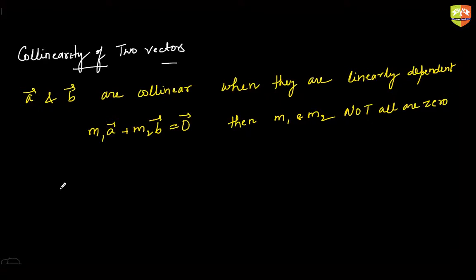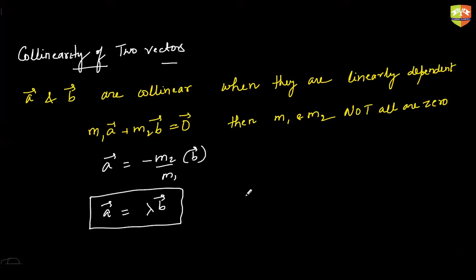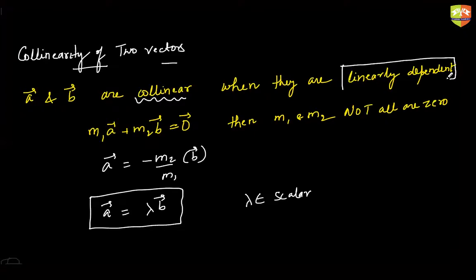In other words, you could express a as minus m2 by m1 times b, which is nothing but expressing a as lambda times b. So if you can express one vector as lambda times the other, where lambda is some scalar, then we say vectors a and b are collinear — they are linearly dependent on each other. That's why the concept of collinearity evolves with the concept of linear dependence.